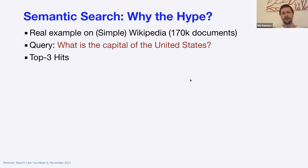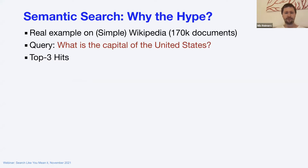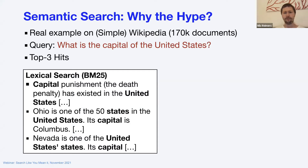Semantic search — why the hype? There's a lot of buzz around semantic search and vector spaces this year and last year, with more and more companies working in this field. The most intuitive way to show this is a real example: take Wikipedia — the simple Wikipedia with 170,000 documents — and a simple user query: 'What is the capital of the United States?' With standard lexical search like BM25 from Elasticsearch, Lucene, or OpenSearch, you get the following top three hits.